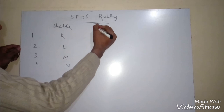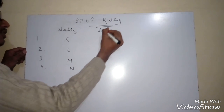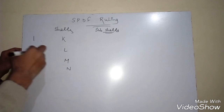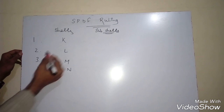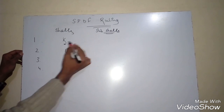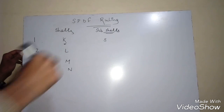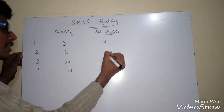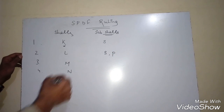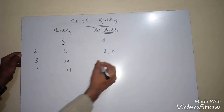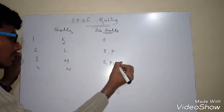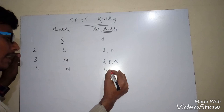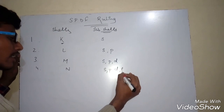The Aufbau Principle tells us that electrons are arranged in subshells, as every shell in an atom contains subshells. The K shell contains one subshell, that is S. L contains two subshells, S and P. Moving towards M, it has three subshells: S, P, and D. And finally, N contains four subshells: S, P, D, and F.